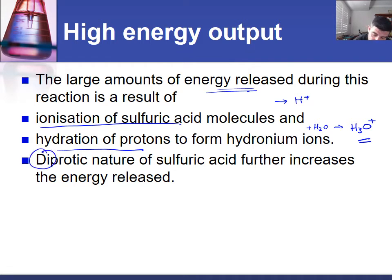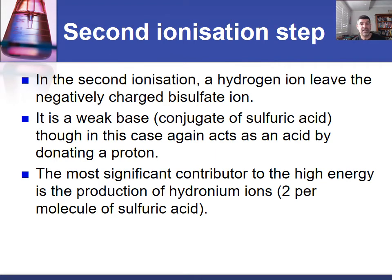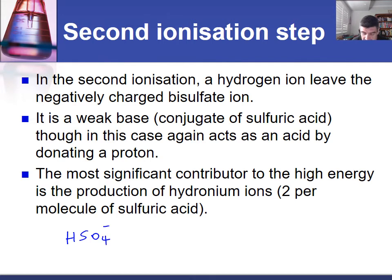The problem with this particular molecule is that it is diprotic, so there is a further ionization step that adds additional energy to the whole process. In the second ionization, a hydrogen ion is going to leave the negatively charged bisulfate ion. Despite the first ionization step producing HSO₄⁻ as a conjugate base, and because a strong acid produces a weak conjugate base, this will be a weak conjugate base.